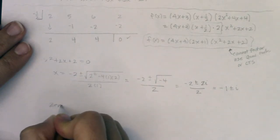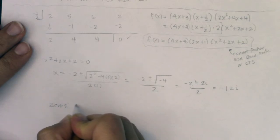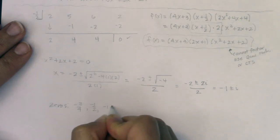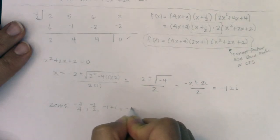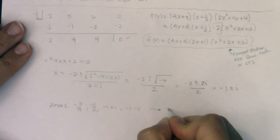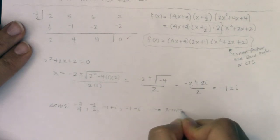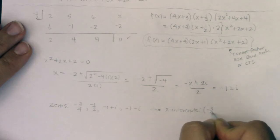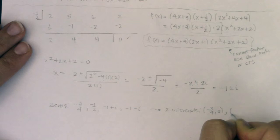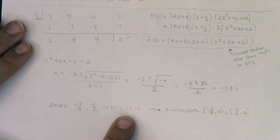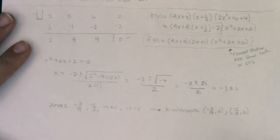So my zeros are: negative three fourths, negative one half, negative one plus i, and negative one minus i — four zeros total. Which of those are actually x-intercepts? Just these two: negative three fourths and negative one half. The complex zeros are not x-intercepts because they don't cross the x-axis.